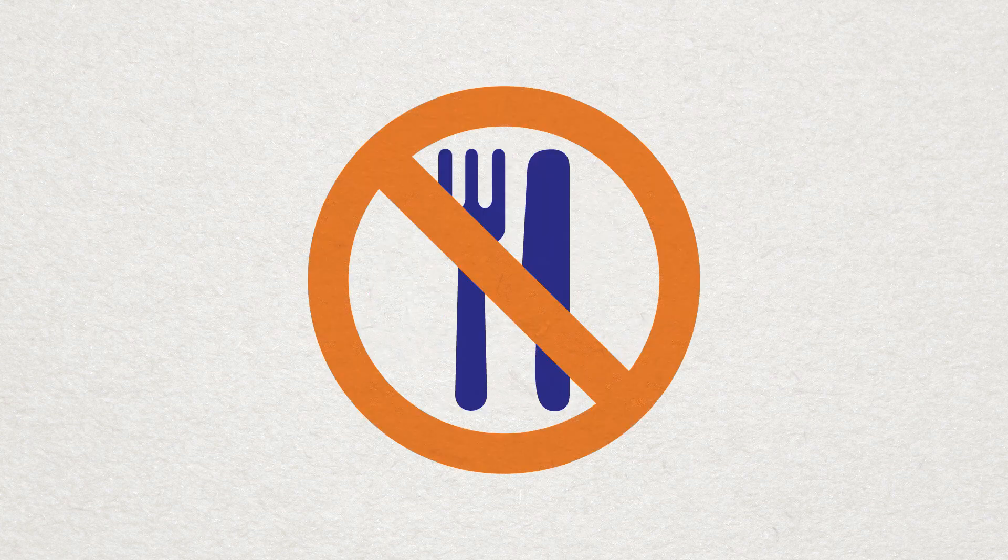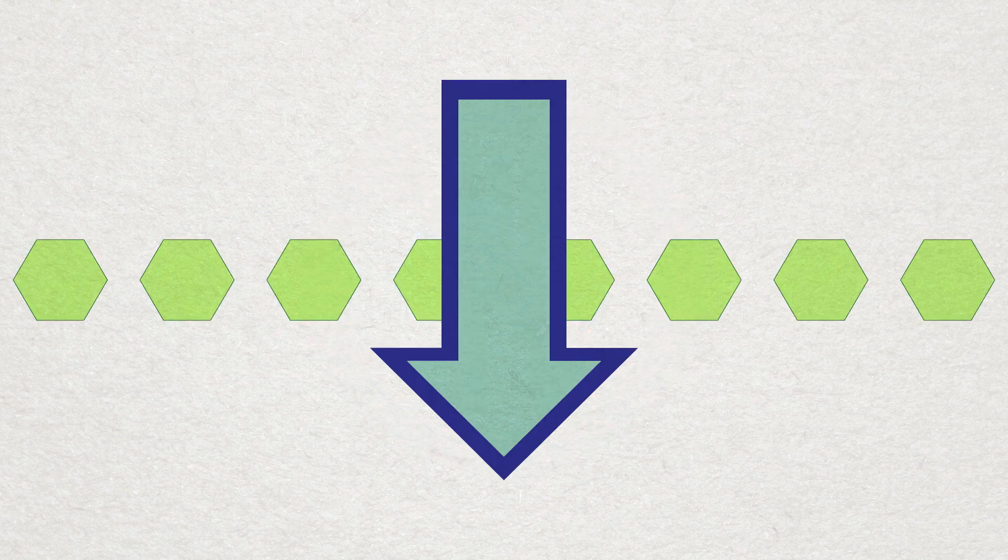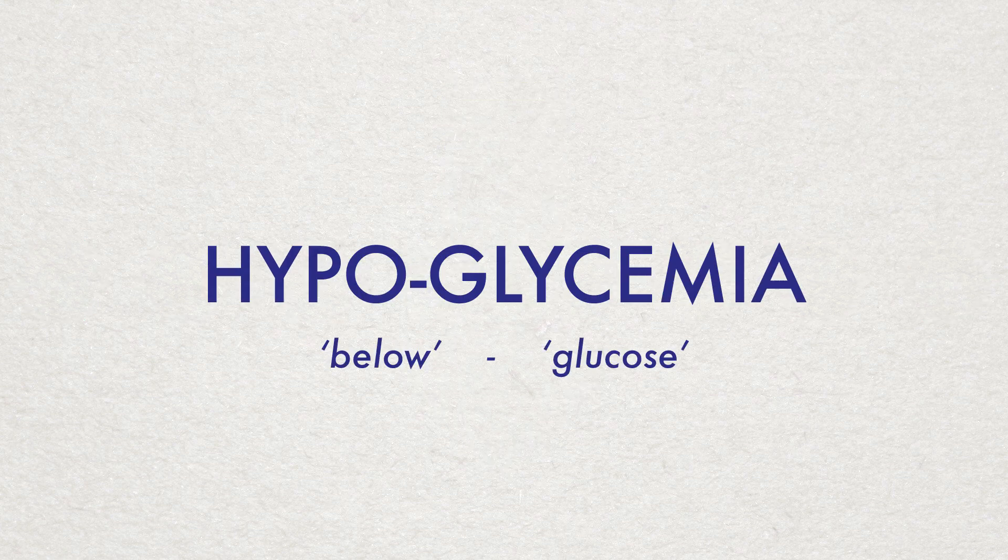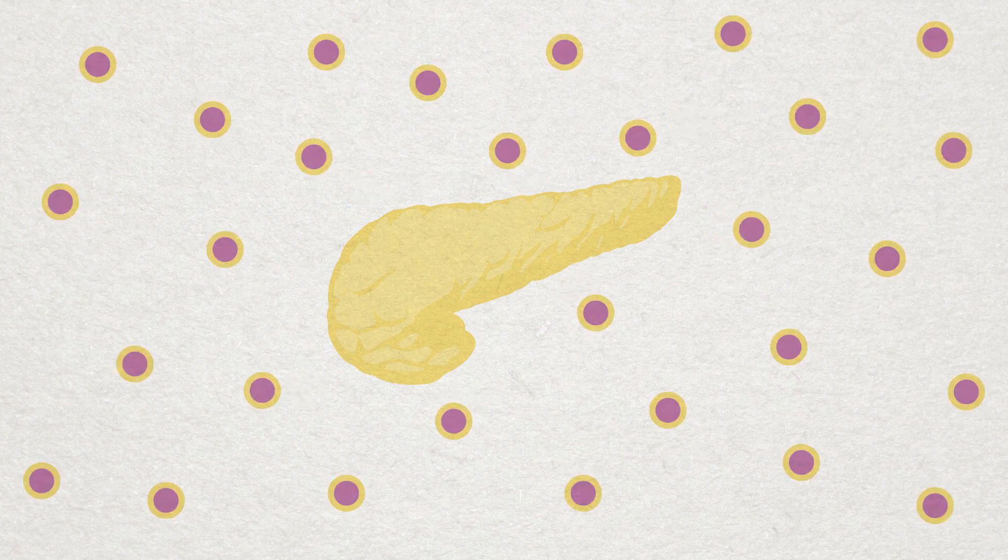Now, let's say it's been several hours and you haven't eaten anything. This would cause your blood glucose levels to drop. The low levels of glucose would trigger the alpha cells in the pancreatic islets to secrete glucagon.